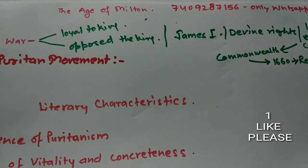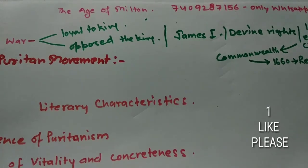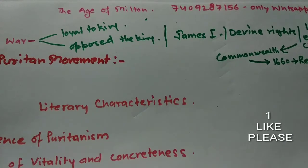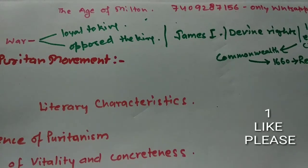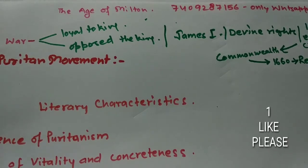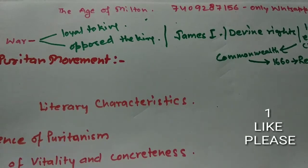The age of Milton is also called the age of Puritanism. If we talk about time span, 1625 to 1660 is the time span.